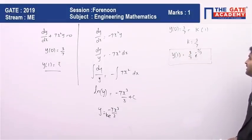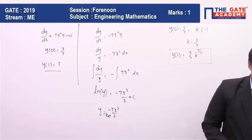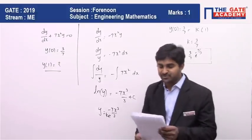(3/7)e^(-7/3). So let me tell you the options which are given.